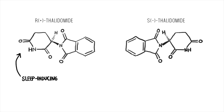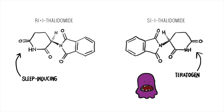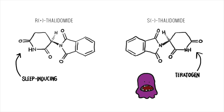The R-thalidomide was sleep-inducing, whereas the S-thalidomide was a teratogen, which translates to monster-making in Greek, as it would cause babies to form severe disabilities and limb deformities.